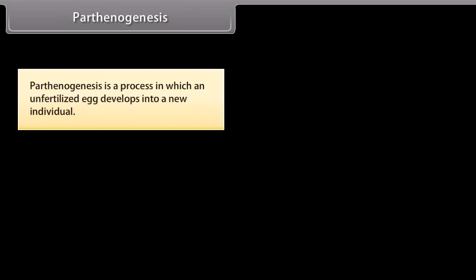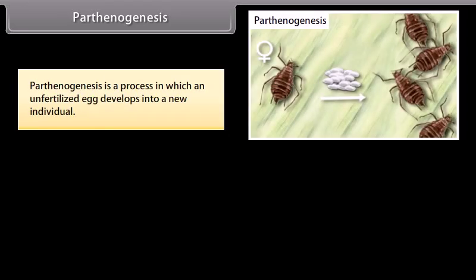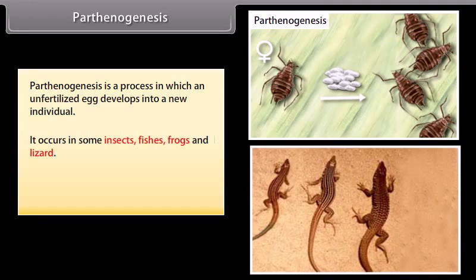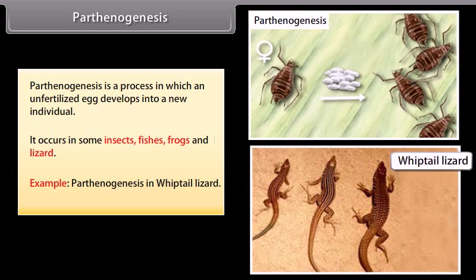Parthenogenesis is a process in which an unfertilized egg develops into a new individual. It occurs in some insects, fishes, frogs, and lizards. Example: parthenogenesis in the whiptail lizard.